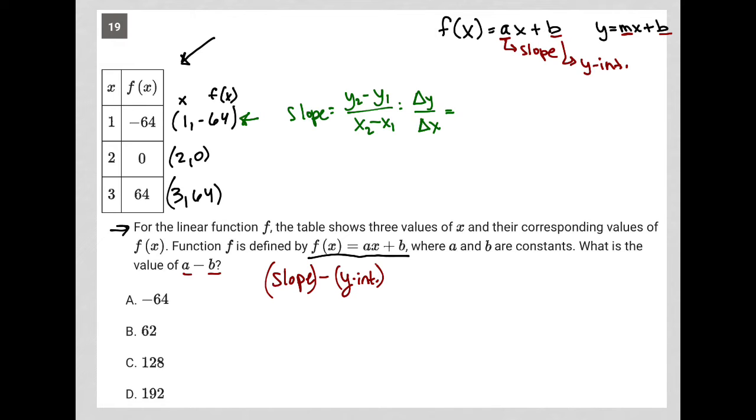So I can just use two points here. I'm going to use the first two. So my x1 and we'll call that y1 and x2 and y2. So I would have zero minus negative 64 from my numerator and two minus one in my denominator. So I'd have zero negative times negative is positive. So I'd have 64 here over one. So my slope is 64, which means a is equal to 64.